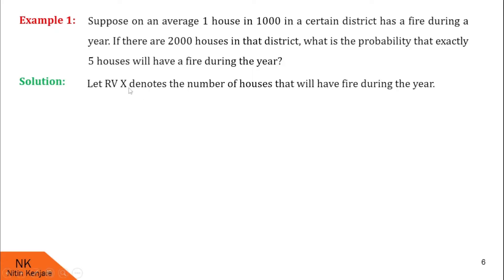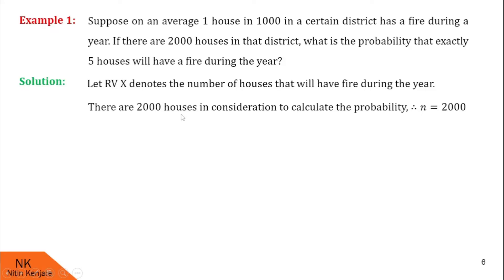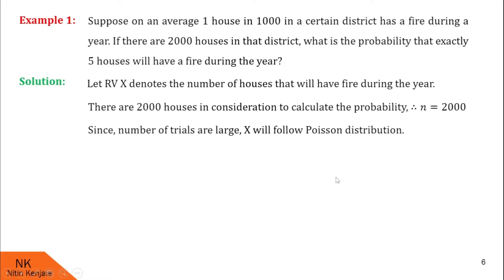Let us proceed for a solution. We define a random variable x which denotes the number of houses that will have fire during the year. Since there are 2000 houses in consideration, here n will become 2000. Since the number of trials are large, x should follow Poisson distribution. Also, since we have to find the probability over a time interval, x will definitely follow Poisson distribution.